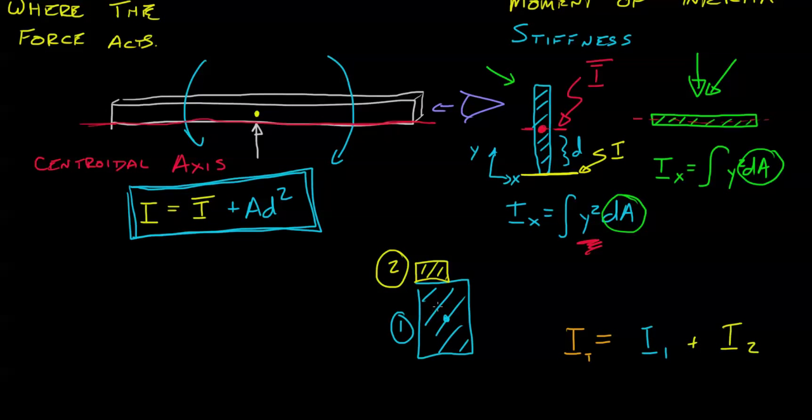We can do the same thing with the second moment of inertia. So let's say that the centroid is, say, right here. Now in this case, what we're going to do is we're going to find out, well, what is the moment of inertia of one?